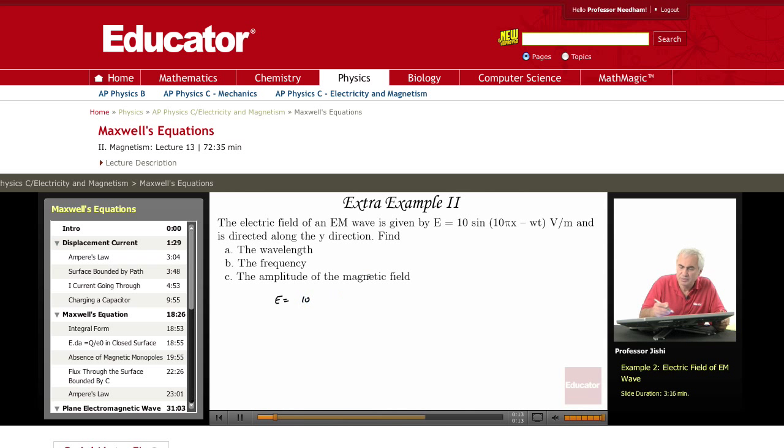It's 10 volts per meter sine 10 pi x minus omega t. First of all, from this form, what do we know? We know that the amplitude of the electric field, that is E max, is 10 volts per meter. It's this.